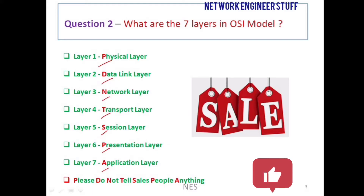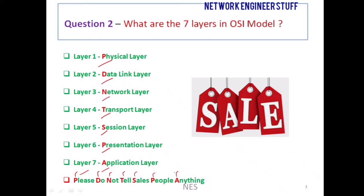I can provide notes and links for each layer's functionality in the description section of this video. A useful mnemonic to remember the layers in order is: 'Please Do Not Tell Sales People Anything' — P for Physical, D for Data Link, N for Network, T for Transport, S for Session, P for Presentation, and A for Application.